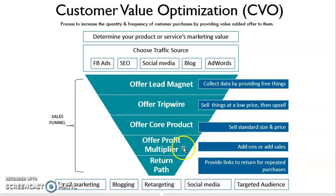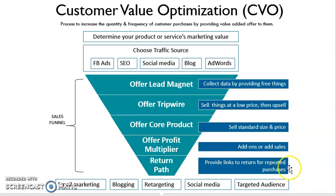Lastly, we are offering them a return path. Return path is not a path to return goods to us — return path is to offer them ways or chances to repeat-purchase the product, maybe for a cheaper price or for certain reasons. Sometimes we offer them: if you buy extra, you get an extra discount. This is what we call the sales funnel CVO method.